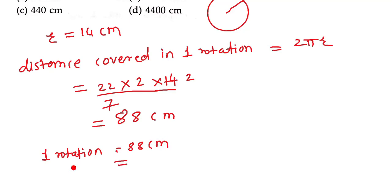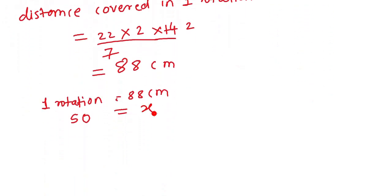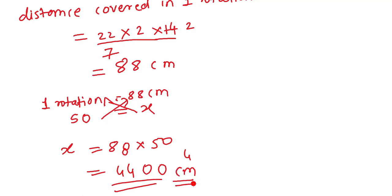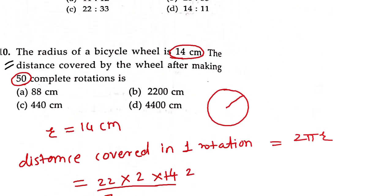50 rotations complete की हैं। So x = 88 × 50 = 4400 cm। यह distance cover कर रहा है wheel — option में 4400 cm आएगा।